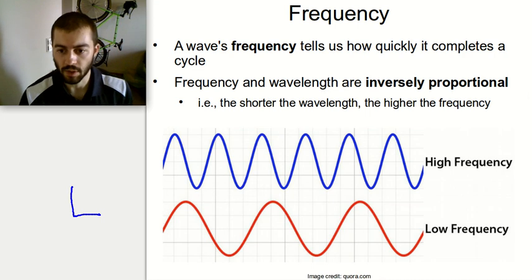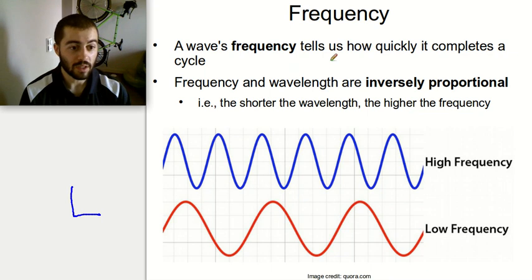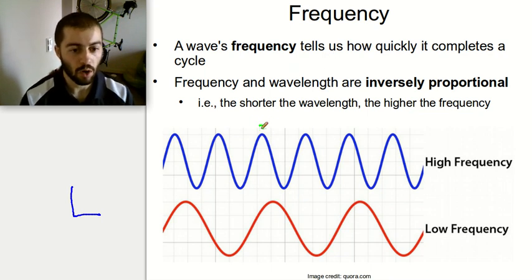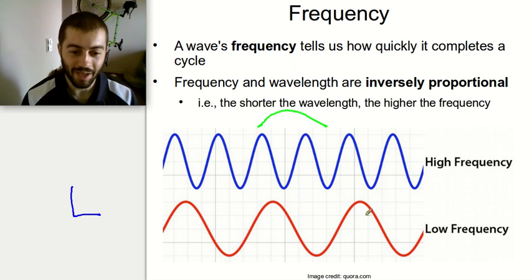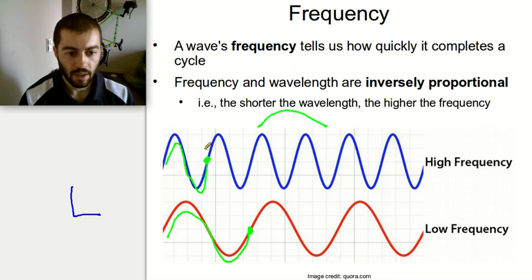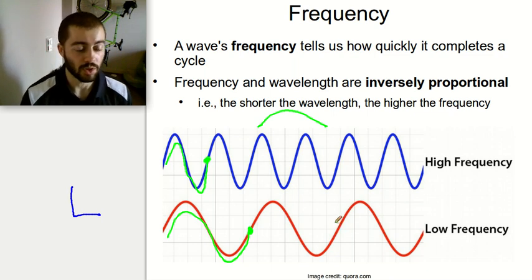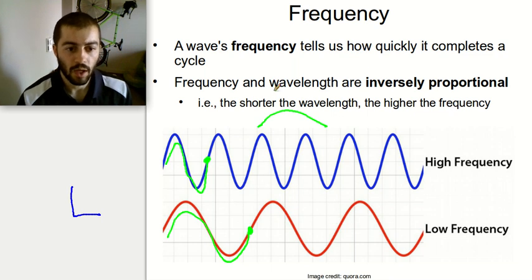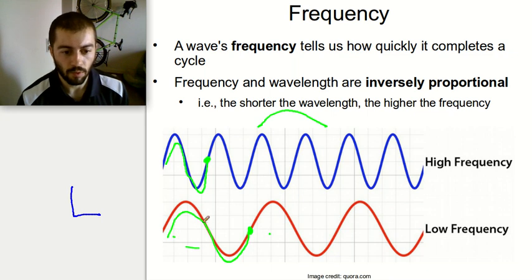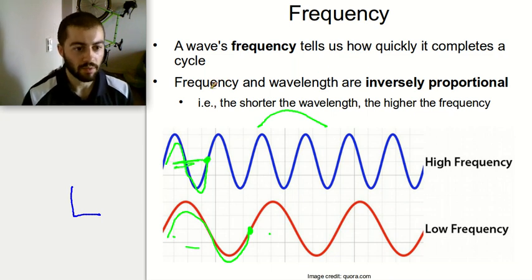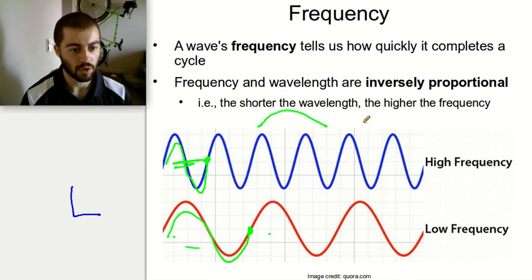The last thing about waves is frequency. Frequency tells us how quickly a wave completes a cycle. Frequency and wavelength are essentially opposites — if something has a long wavelength, it takes longer to complete one cycle, so it has a lower frequency. If something has a short wavelength, it completes cycles quickly, giving it a high frequency. Wavelength and frequency are always inversely proportional: the bigger the wavelength, the smaller the frequency, and the shorter the wavelength, the higher the frequency.